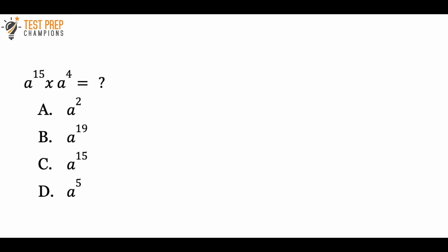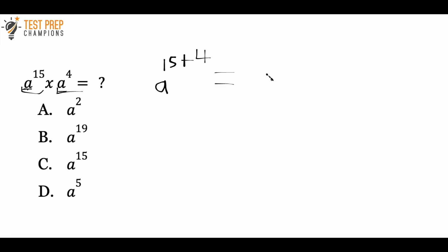To get this question right, we have to remember our exponent rules. The exponent rule we need here is that when multiplying two terms that have the same base, we can take that base and add up the exponents. So we have a to the 15 times a to the 4. Since they both have a as the base, we can rewrite this as a to the 15 plus 4. And 15 plus 4 is 19, so the answer is a to the 19. B is the correct answer.